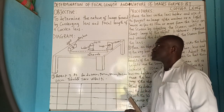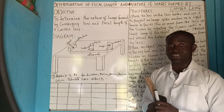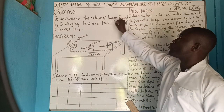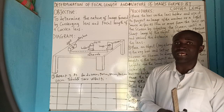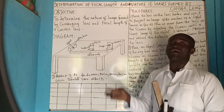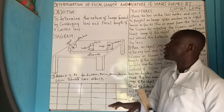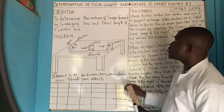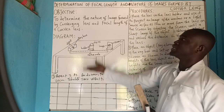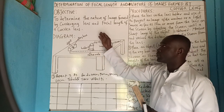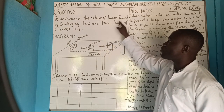Welcome to today's class. In today's video I want to discuss another very important experiment in physics: determination of focal length and the nature of images formed by a converging lens. We have converging lenses and concave lenses which we call diverging lenses. This experiment will focus on determining the focal length and nature of images formed by a converging lens.